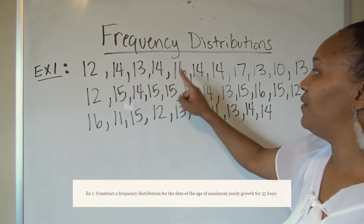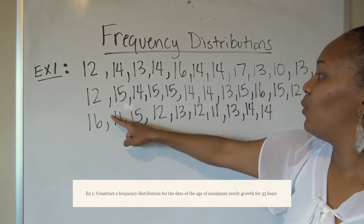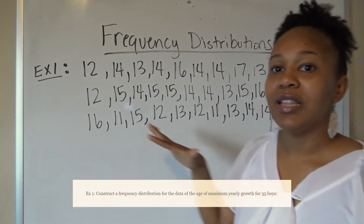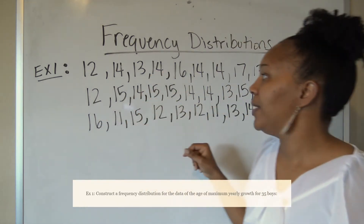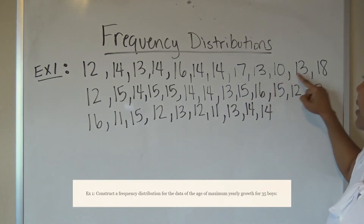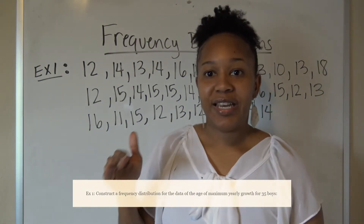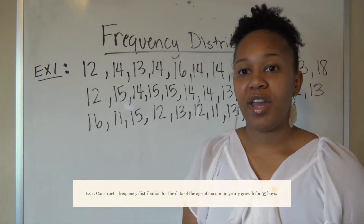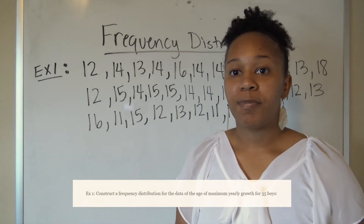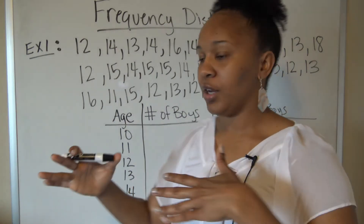You can see ages like 12, 14, 13, 14, 16, 14, 17, 18, 12, 15, 14 — there are a lot of numbers. The smallest age is 10 and the largest is 18, so the ages go from 10 to 18. When we create our frequency distribution, we'll start at 10 and go to 18.